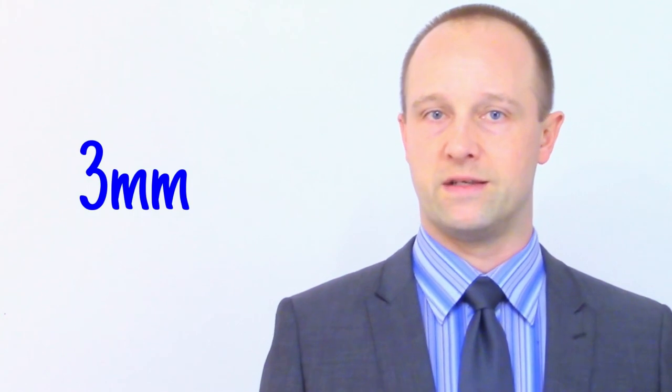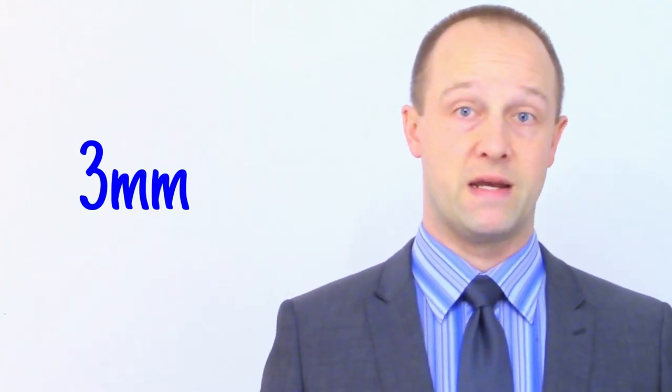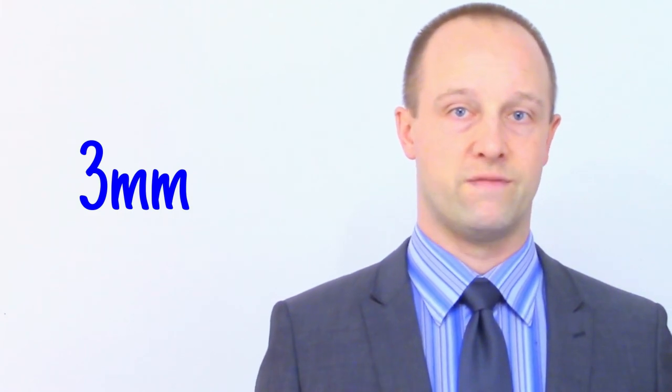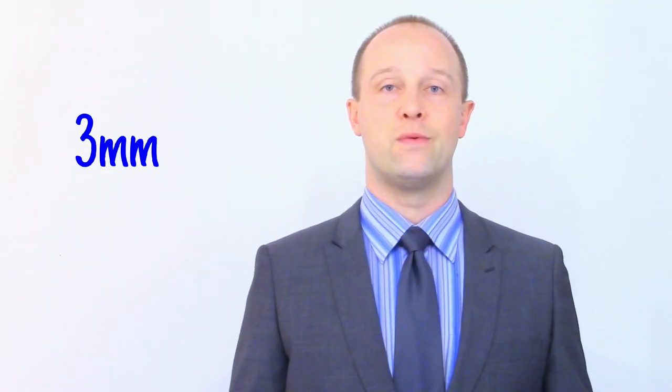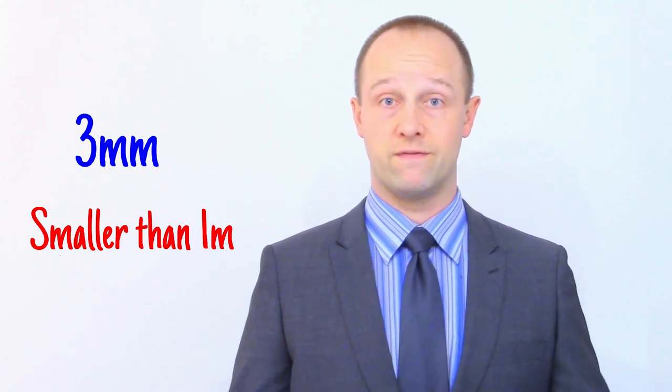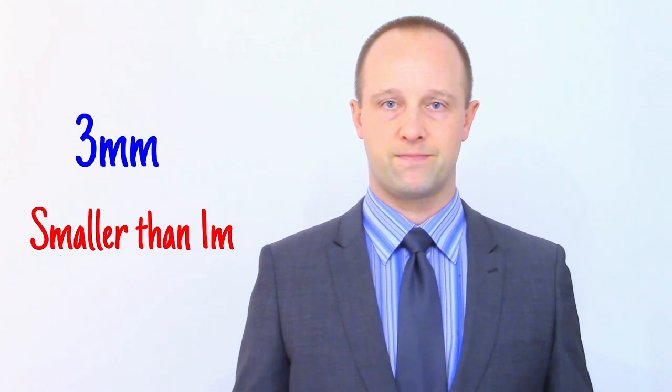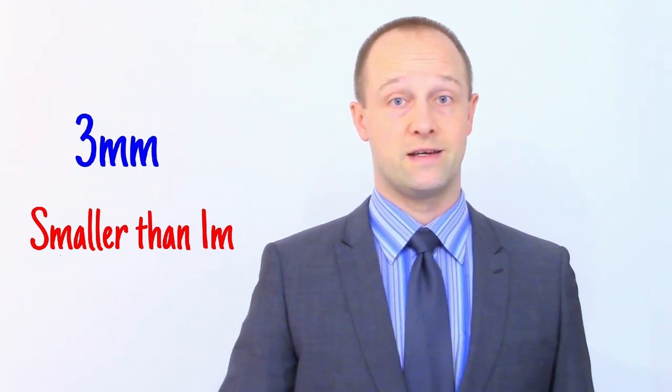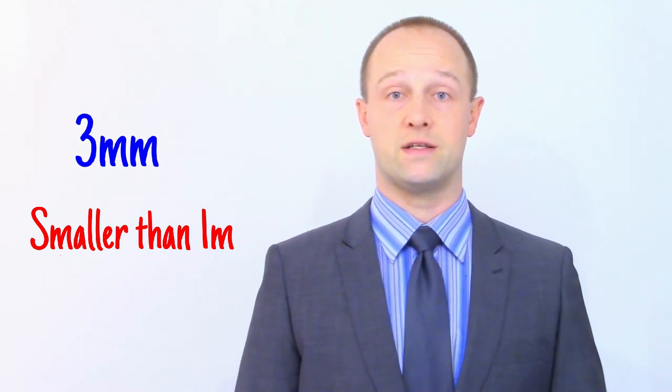The trick I taught you earlier to decide whether to multiply or divide works here too. Let's say, for example, that you have a measurement of three millimetres that you want to convert to metres. Is three millimetres going to be bigger or smaller when we convert it to metres? Take a moment to think. Again, it's not a trick. Hopefully you realise three millimetres will come out as a smaller number when we convert it to metres, because, of course, three millimetres is much smaller than a metre. If you can do that, you can work with unit prefixes, even if you don't have a scientific calculator.